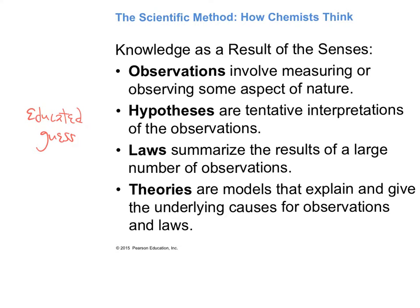Then we have laws, which summarize a large number of observations and experiments. Eventually we arrive at theories, which is a term that gets misused in science. Theories are models that try to explain everything we've seen — the observations, the laws — tying things together. A theory doesn't necessarily mean something is not factual; it doesn't carry the same connotation as in everyday usage.